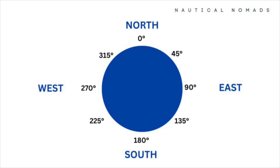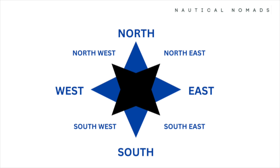Between these main points are intercardinal directions like northeast, southeast, southwest, and northwest — each sitting halfway between two cardinal points. For example, northeast is halfway between north and east, located at 45 degrees on a compass. Southeast is 135 degrees, southwest is 225 degrees, and northwest is 315 degrees.